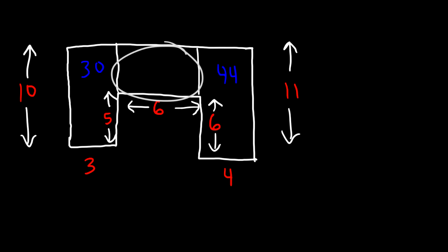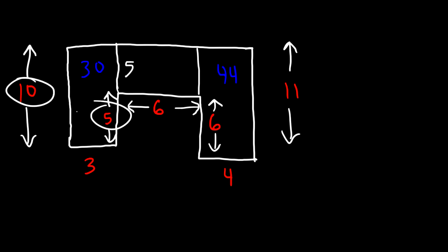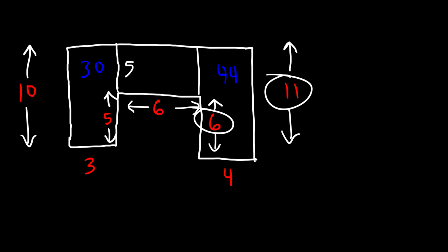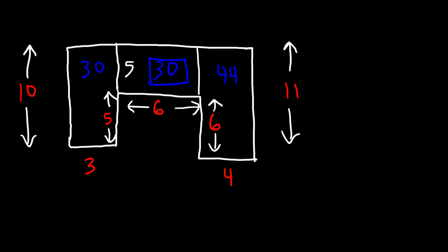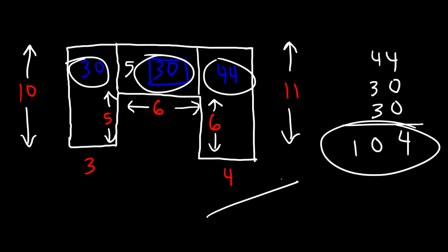For the third rectangle the length is 6, and the width is the difference between 10 and 5, which is 5 — confirmed also by 11 minus 6 equals 5. So 5 times 6 is 30. Adding all three: 44 plus 30 plus 30 equals 104 square units. That's the total area of this composite figure.